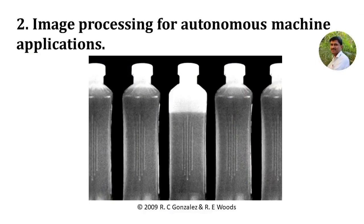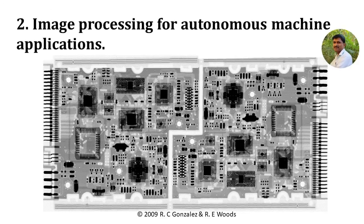Image processing is mostly motivated by autonomous machine applications. We can list hundreds of examples for this, but for understanding purposes, we will consider two examples here. Consider an automatic bottle filling application used by an industry that manufactures some liquid chemical. If the industry sells partially filled or empty bottles, then the goodwill of the company will be lost. Image processing techniques can be used to build an automatic quality control system to check this criteria. The next example is automatic PCB checking. It is almost impossible to check the quality of subtle electronic boards manually. There are various image processing techniques to check the quality of printed circuit boards.